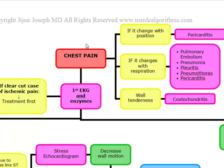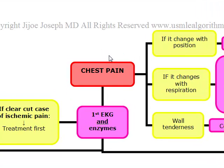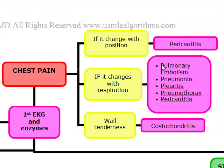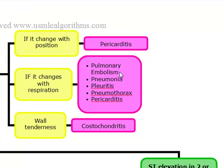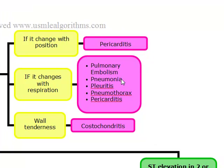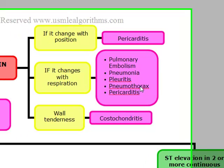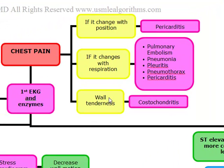First look at the history and then the presentation. If the chest pain changes with position, this is most probably pericarditis and not coronary artery disease. If it changes with respiration, you're going to look for all the P's: pulmonary embolism, pneumonia, pleuritis, pneumothorax, and pericarditis. And if you have chest pain that has wall tenderness along with it, you're going to be thinking costochondritis.